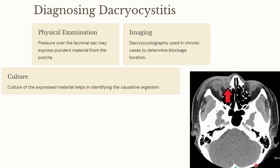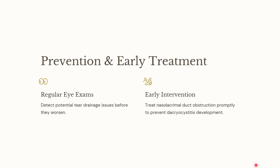Prevention: early treatment of nasolacrimal duct obstruction can prevent the development of Dacryocystitis. Regular eye examination can also help to detect potential problems with the tear drainage system before they become severe.